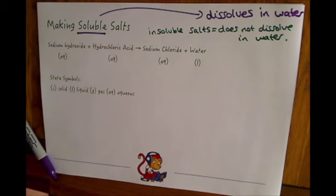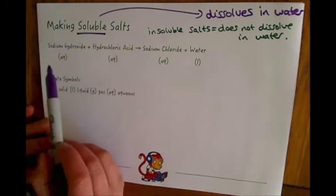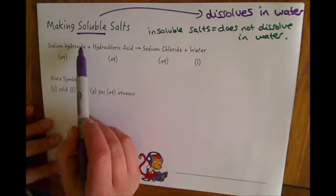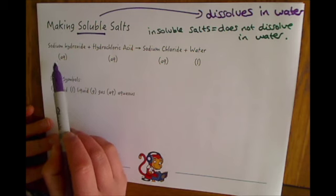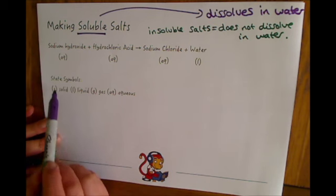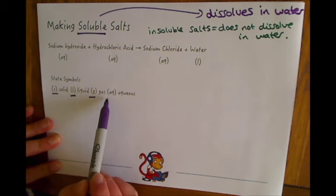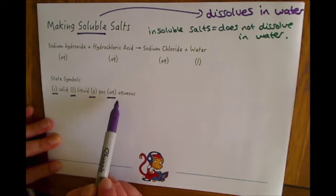The important thing we need to know about for understanding soluble and insoluble salts is the state symbols that come with equations. These will always be next to the reactants and products in the equation. They tell you whether the substance is a solid (S), a liquid (L), a gas (G), or aqueous (aq).